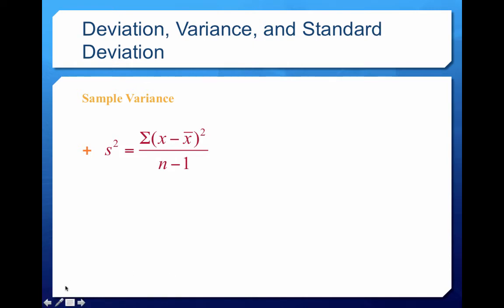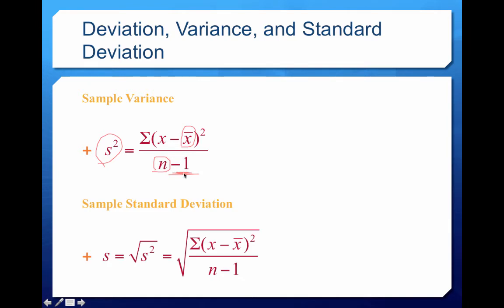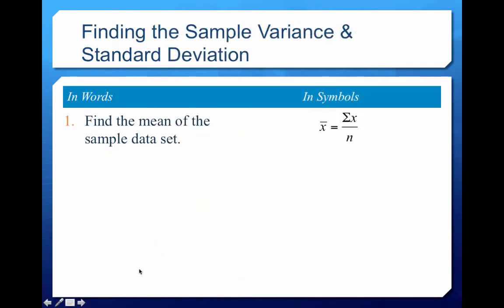When dealing with a sample instead of a population, the notation changes: we use s squared instead of sigma squared, X-bar instead of mu, and little n instead of capital N. Crucially, we divide by n minus 1 instead of n — this is an error-correcting measure. The sample standard deviation s is still just the square root of the sample variance.